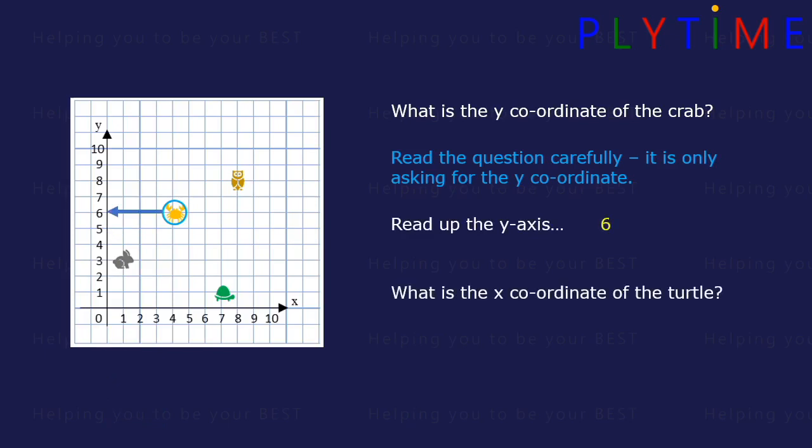What's the x-coordinate of the turtle? First we need to find the turtle, then read along the x-axis to the 7. So the x-coordinate is 7.